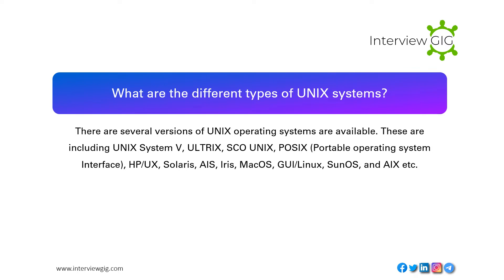What are the different types of Unix? There are several versions of Unix operating systems available, including Unix System V, Ultrix, SCO Unix, POSIX (Portable Operating System Interface), HP-UX, Solaris, AIX, IRIX, Mac OS GUI, Linux, SunOS, and AIX, etc.